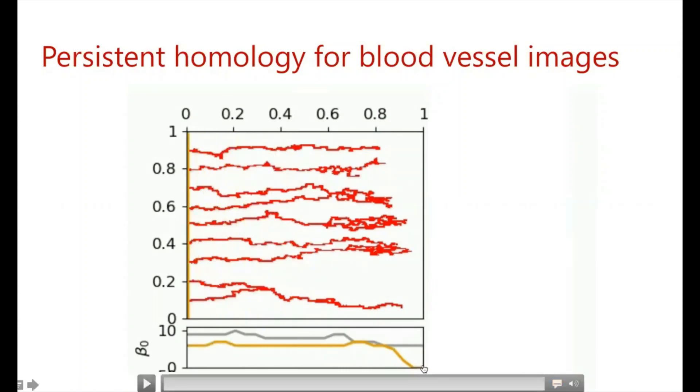So what we observe here is that originally we have no connected components to the right of our line. But then once we start to cross the lengths of our vessel segments, we have an increase in the number of connected components. And then at branching events, we have our number of connected components decrease.